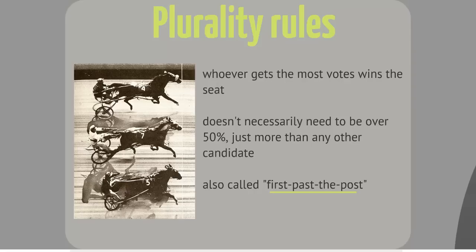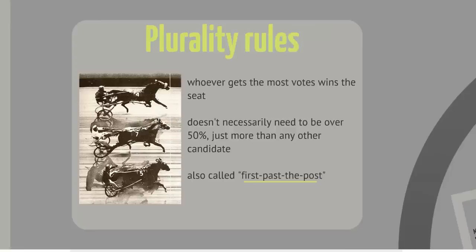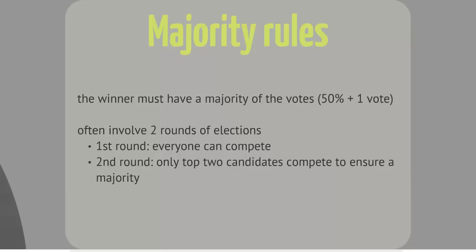The other type of majoritarian single-member district electoral system involves majority rules. Just as this name implies, these rules require that the winner get an absolute majority of the votes — that is, 50% of the votes plus one vote. Because of this requirement, these elections often require two rounds: a first round in which any qualified candidate can compete, and then a second round in which only the two largest vote-getters from the first round compete. With only two candidates in the second round, the results are virtually guaranteed to include a majority, except in the very unlikely circumstance of an absolute tie.